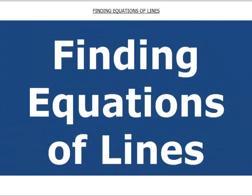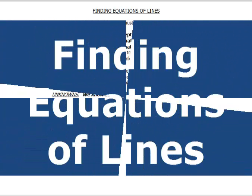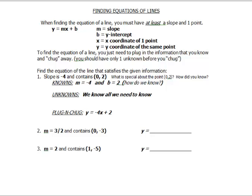We're going to talk about finding equations of lines today. We already have the equation y equals mx plus b, where m is the slope and b is the y-intercept.